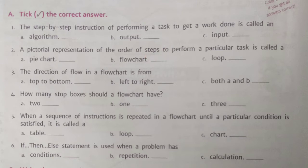Next question: the direction of flow in a flowchart is from — options: top to bottom, left to right, or both A and B. The correct answer is both A and B. We can have the direction of flow in a flowchart either from top to bottom or left to right. So the correct answer is option C, both A and B.